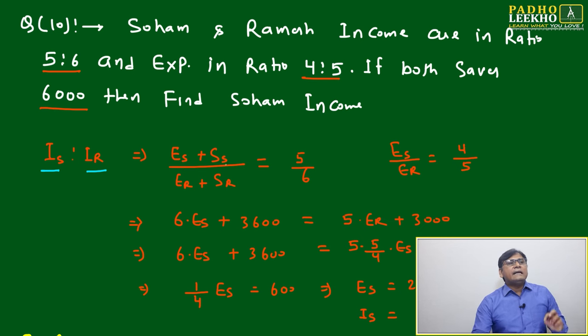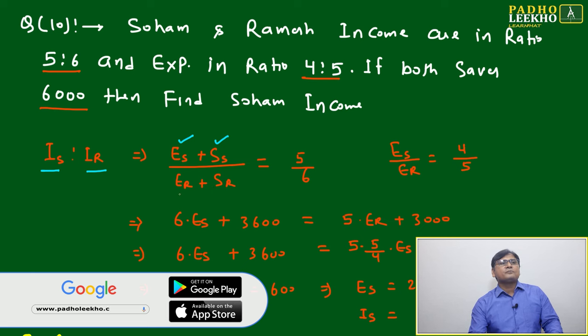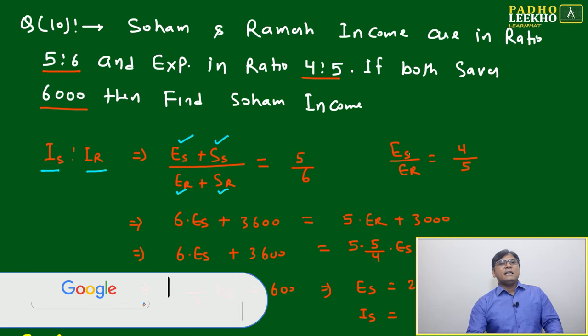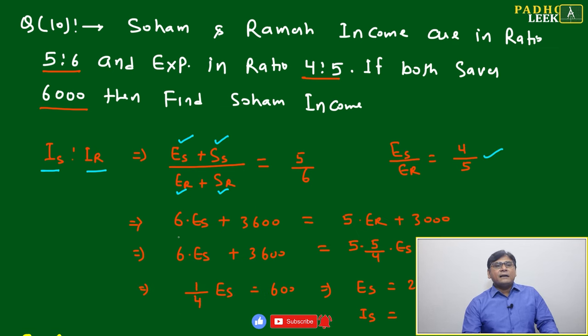Soham's income, Raman's income - we can write income equals expenditure plus savings. This is expenditure of Soham, savings of Soham, expenditure of Raman, savings of Raman. The income ratio is given as 5/6. Expenditure of Soham by Raman's is given as 4:5.